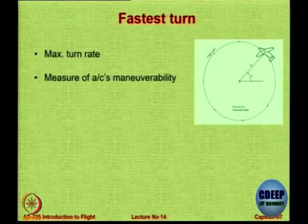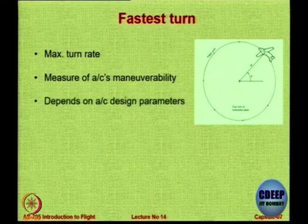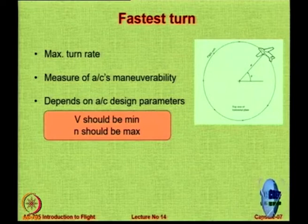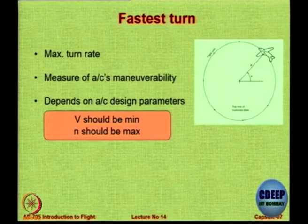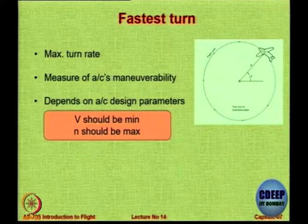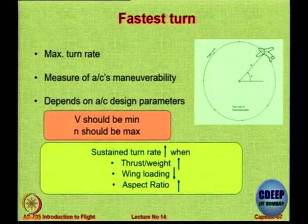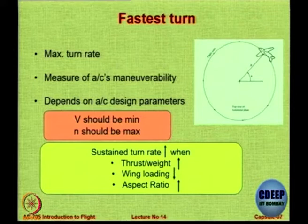The fastest turn corresponds to maximum turn rate, which is a measure of the aircraft's maneuverability and depends on V and N. V should be minimum and N should be maximum if you want the fastest turn rate. Lower speed and higher N give you faster turn rate; higher speed and higher N give you a tighter turn. There are two types of turns: a sustained turn and an instantaneous turn.